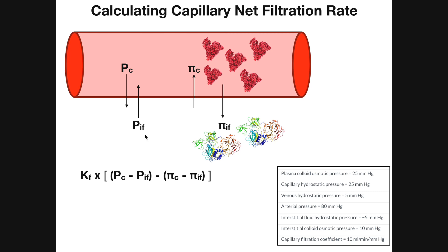These two pressures are due to the movement or presence of liquid — hydrostatic pressures that exert force against a wall. The capillary hydrostatic pressure pushes from within the capillary, while the interstitial fluid hydrostatic pressure pushes from the opposite direction. In contrast, the pressures on the other side are osmotic pressures, which function very differently — related to the proteins in the blood and in the interstitial fluid.